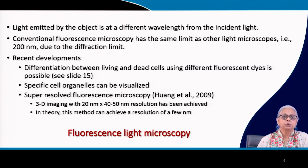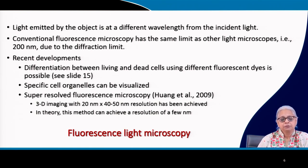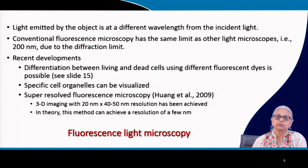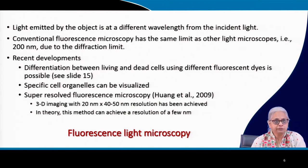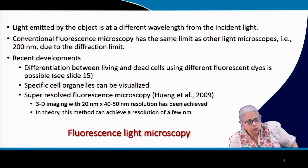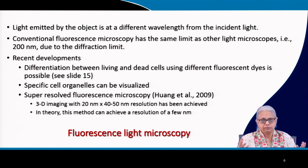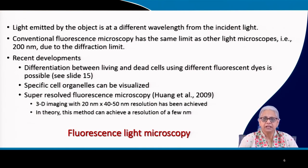We now come to a new development in light microscopy — fluorescence microscopy. Fluorescence is a phenomenon where the light emitted by the object is at a different wavelength compared to the incident light. Some of you may be familiar with the natural fluorescence of chlorophyll. Under sunlight conditions, if any cell has chlorophyll in it, it looks green — we are all familiar with algae and plants having a green color because of chlorophyll.